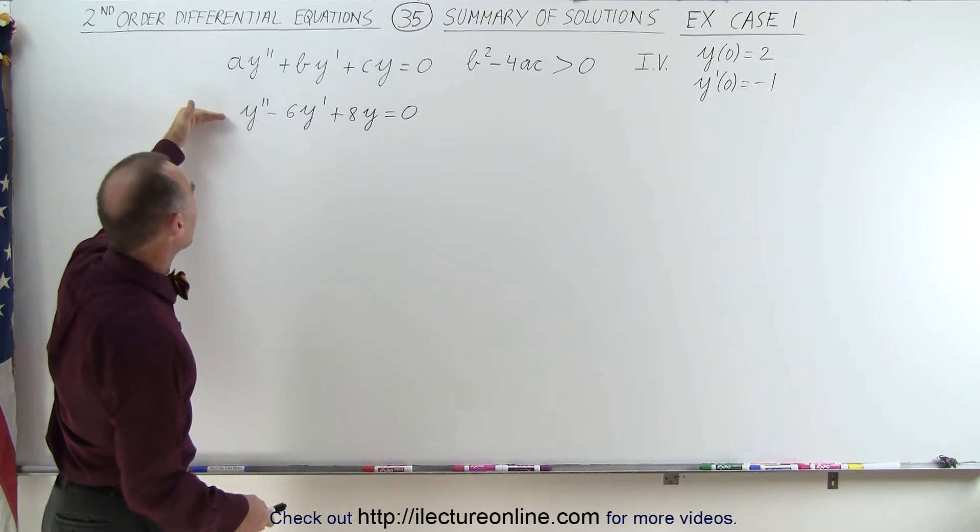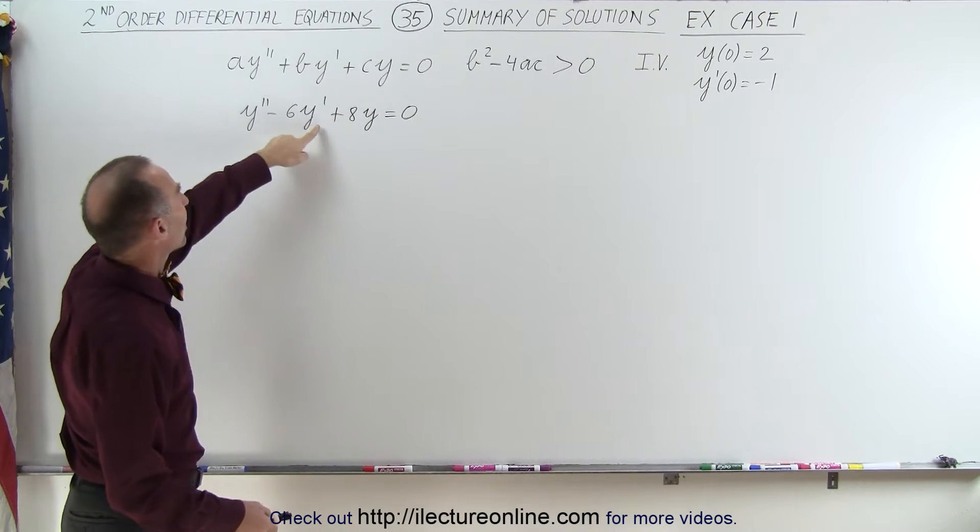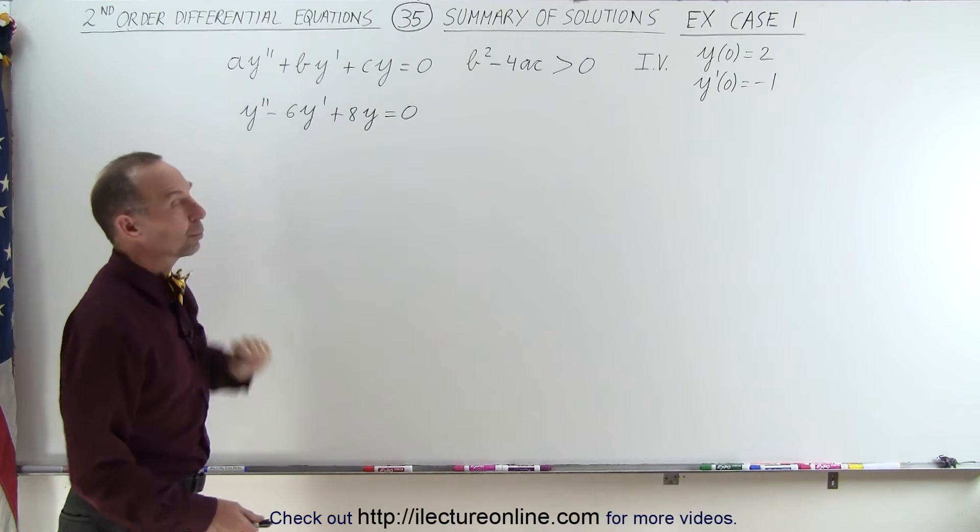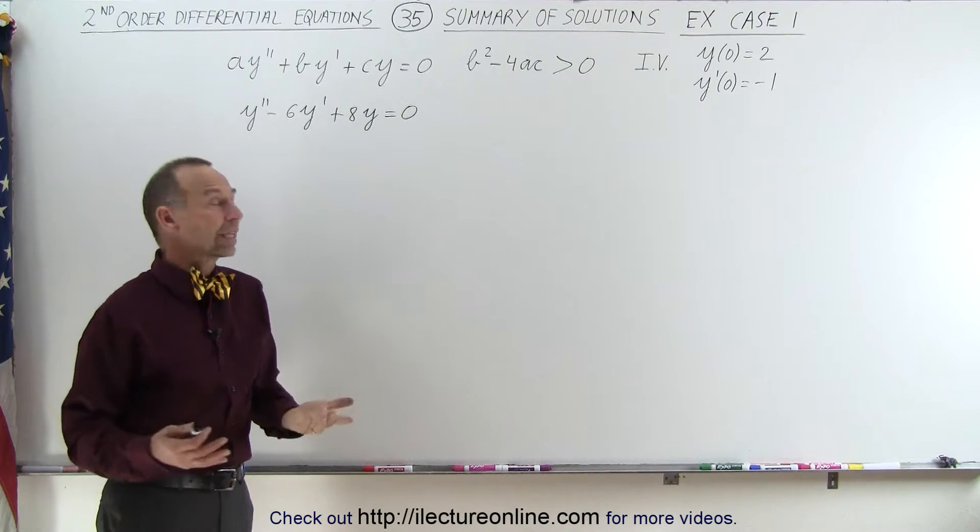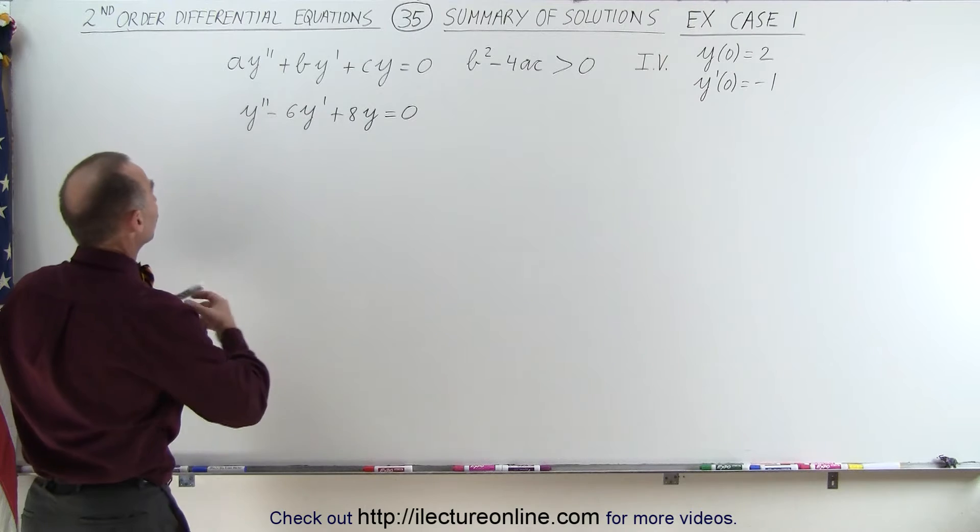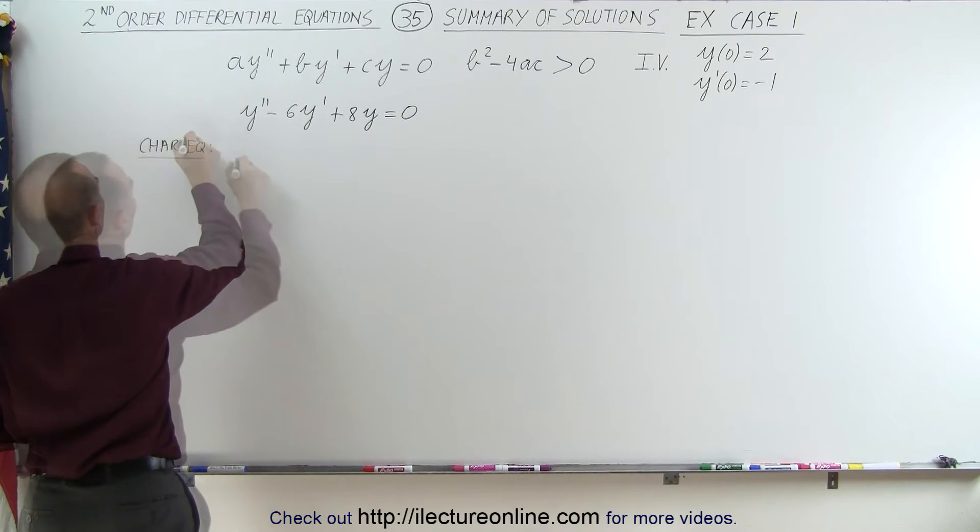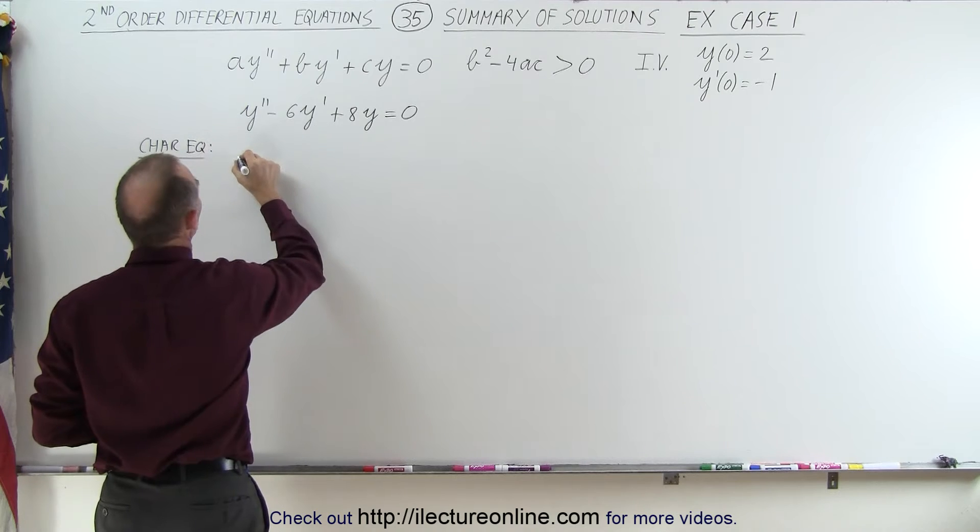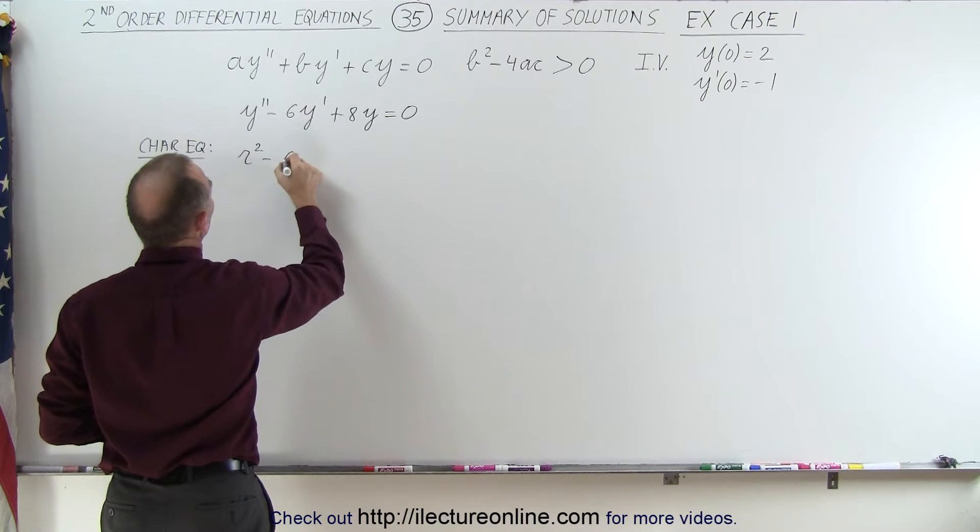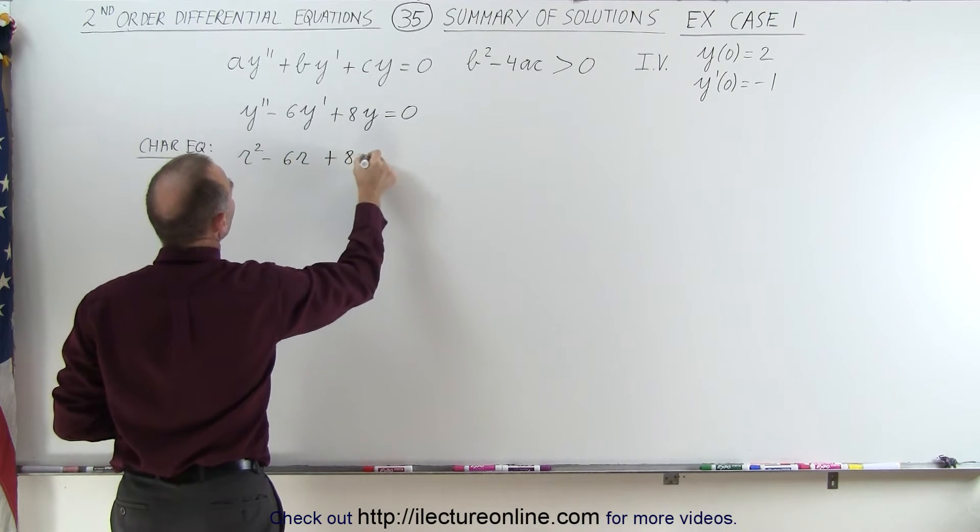And here's our example problem: y double prime minus 6y prime plus 8y equals 0. So let's use the characteristic equation to find the two roots. The characteristic equation will look as follows: r squared minus 6r plus 8 equals 0.